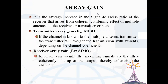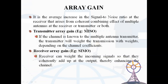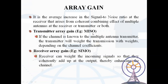Array gain is the average increase in signal-to-noise ratio at the receiver that arises from the coherent combining effect of multiple antennas at the receiver, transmitter, or both. Transmitter array gain: if the channel is known to the multiple antenna transmitter, the transmitter will weight the transmission with weights depending on the channel coefficients so that the receiver receives the data coherently — for example, in MISO. Receiver array gain: the receiver can weight the incoming signals so that they coherently add up at the output, thereby enhancing the channel — for example, in SIMO and MIMO.